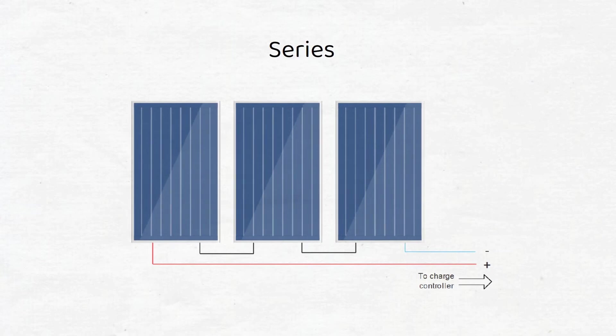Let's say each panel is rated at 20 volts and 5 amps. That means that the output of this series connection is 60 volts and 5 amps to the charge controller.